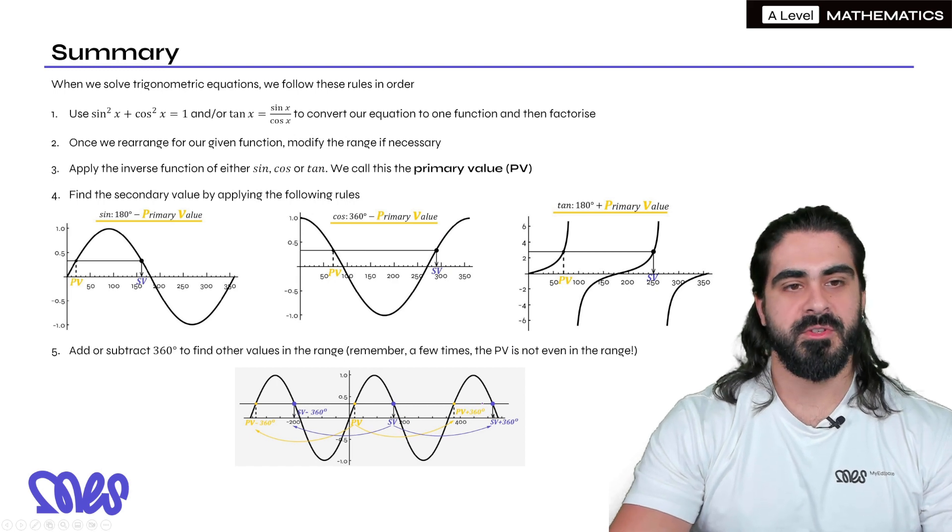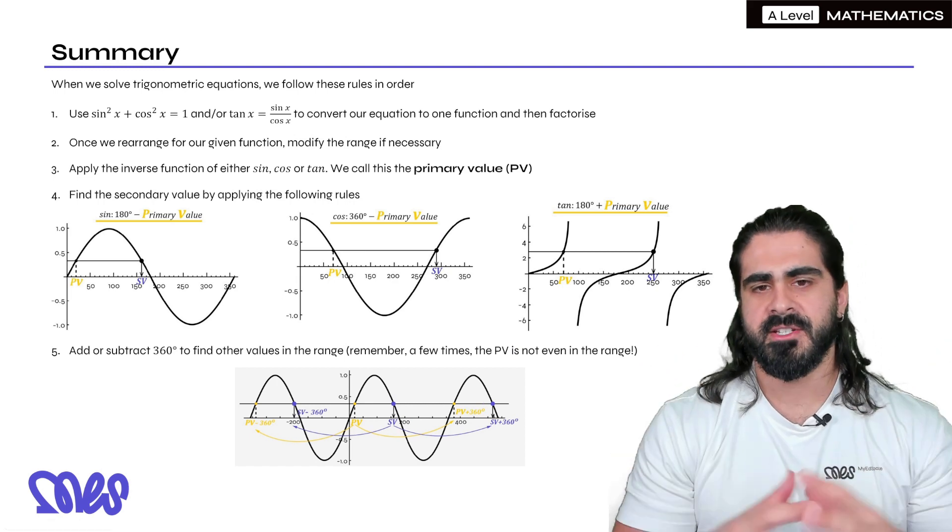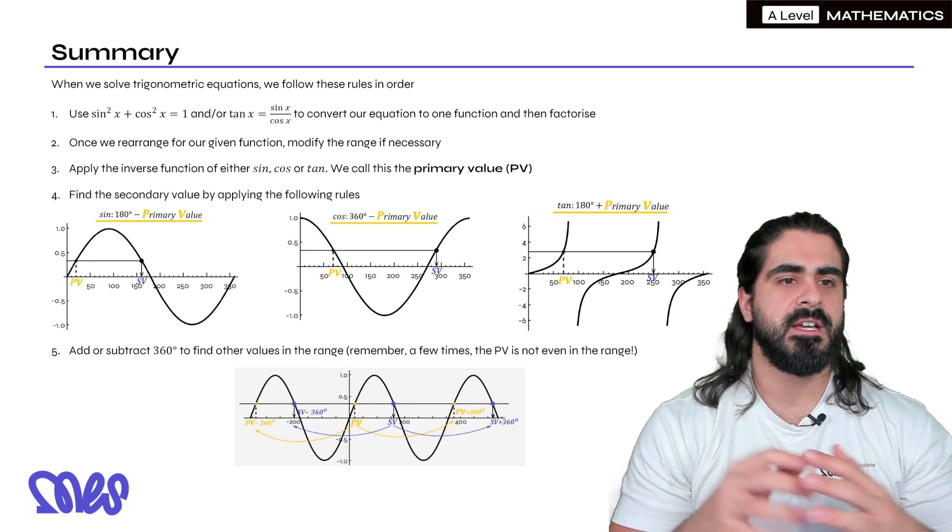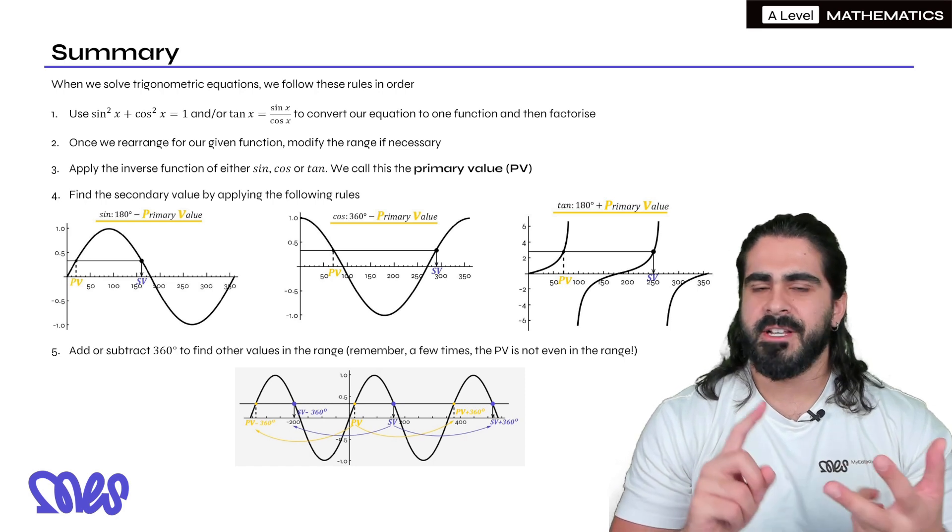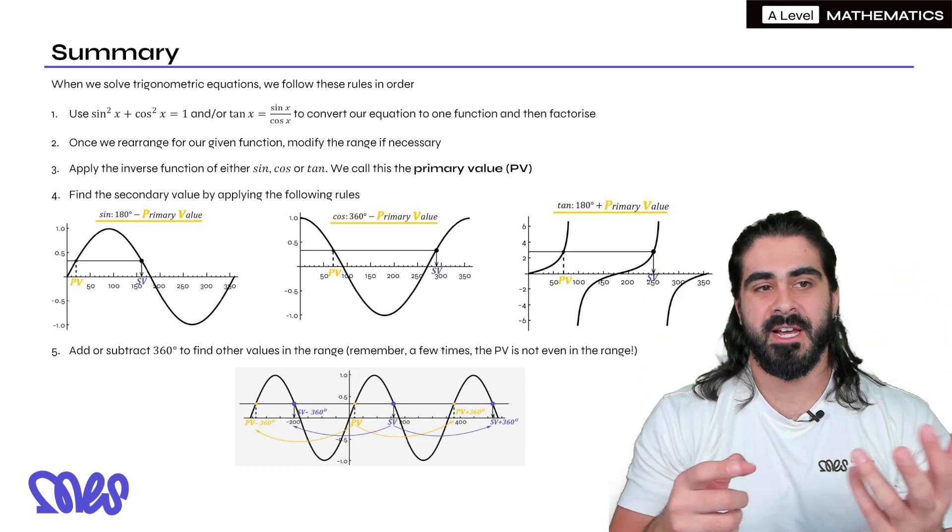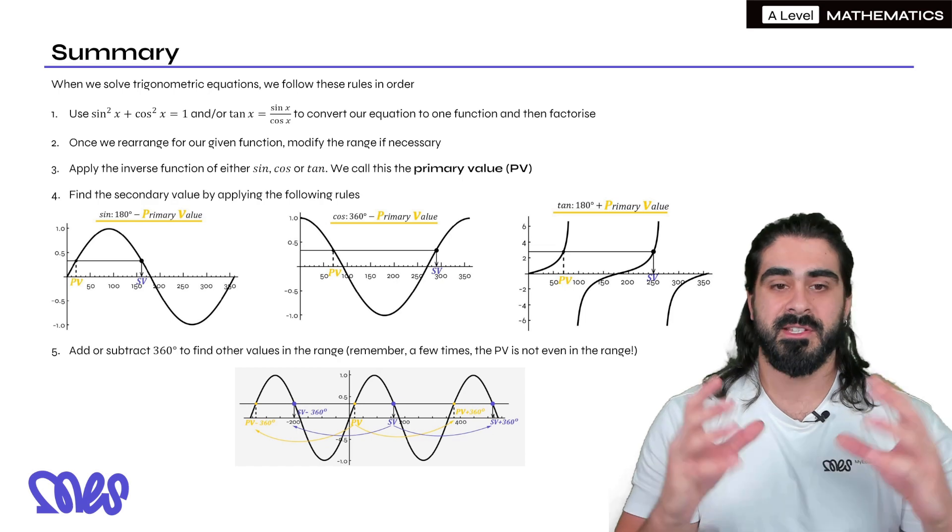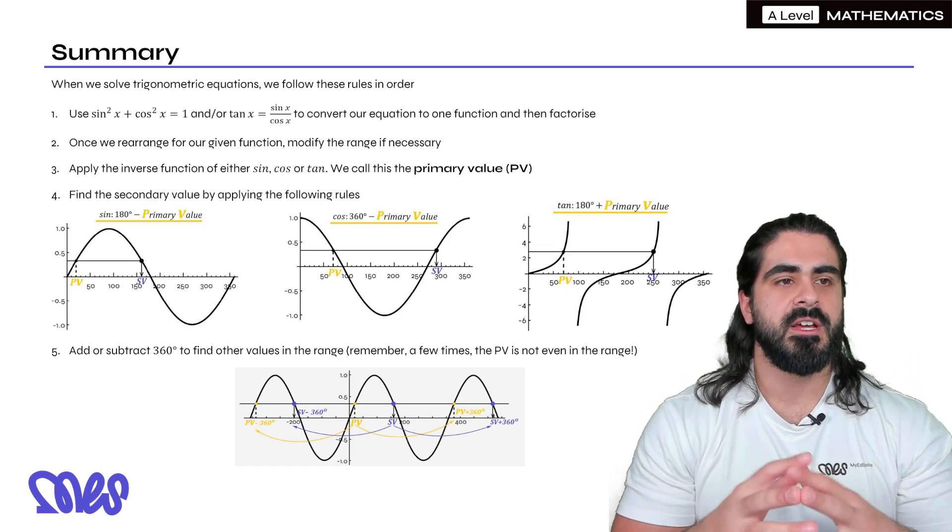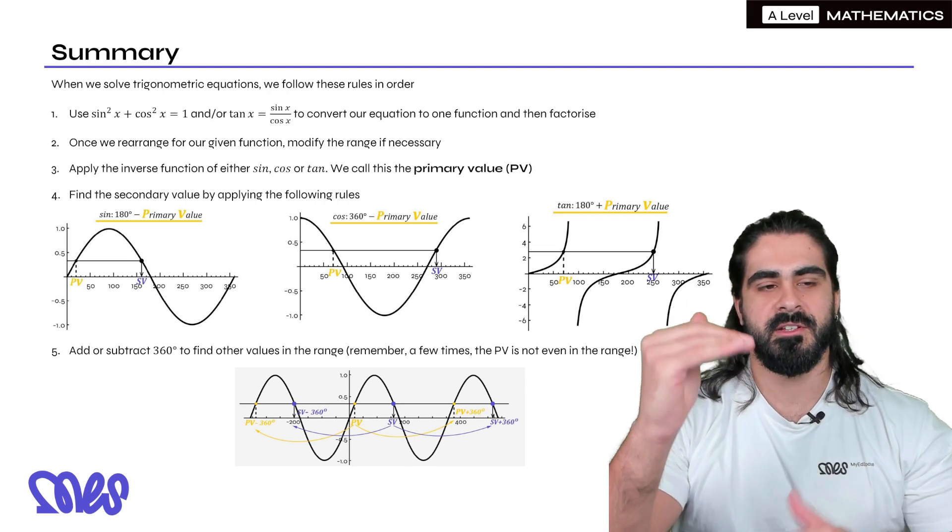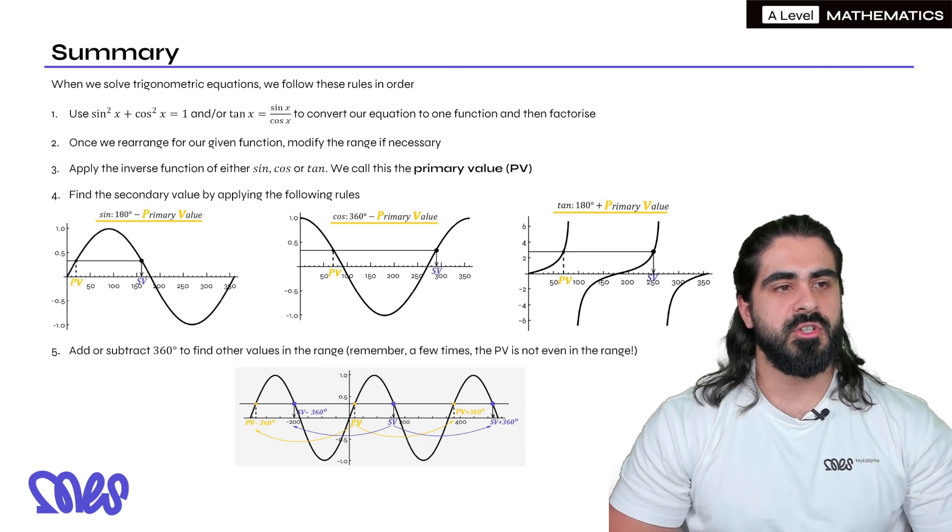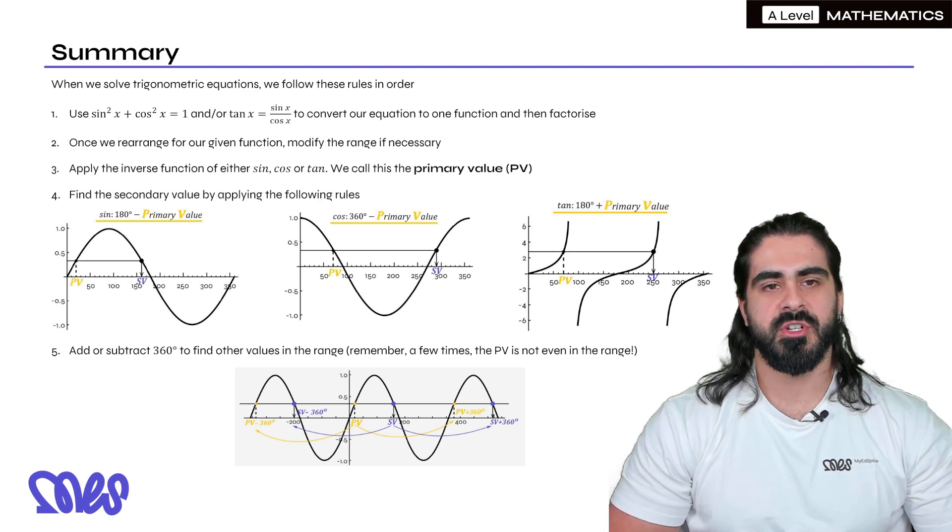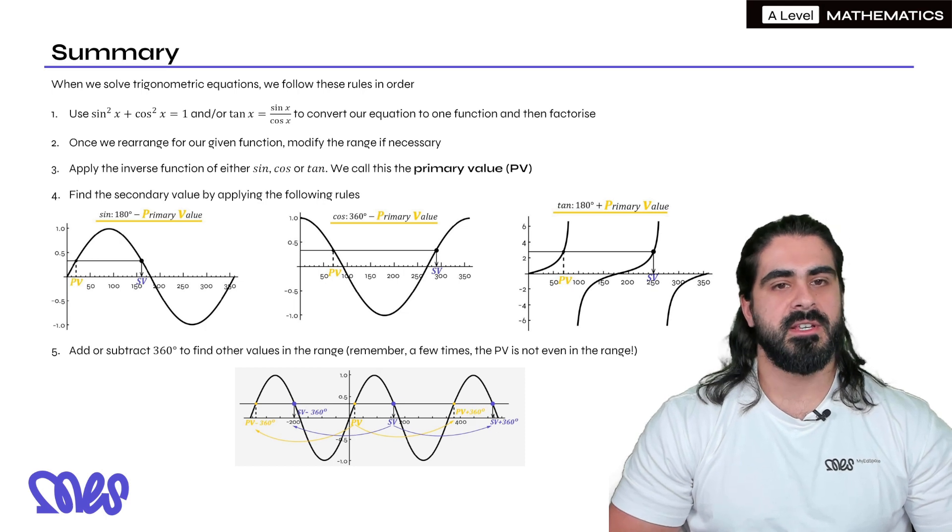So that is trigonometry for year 12. And really, these key principles you're actually taking to year 13 as well. It's just in year 13, we deal with more functions, such as cosec, cot, and sec. These are all the reciprocal functions. But then, at the end of the day, you get to eventually sine, cos, or tan, and then you just do the same rules. So these are really important for you to remember for next year. In summary, when we solve trig equations, we follow these rules in order. And as you notice, through the episodes, we've kind of increased the amount of things that we need to consider. Step 1 is we use either sine squared plus cos squared equals 1 and or tan x equals sine over cos to convert our equation into one function and factorize if necessary.